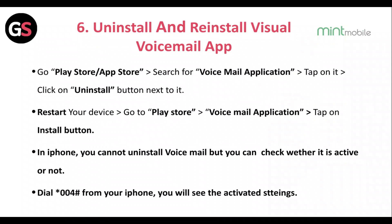Fix 6: Uninstall and reinstall the Visual Voicemail app. Go to the Play Store or App Store and search for the Voicemail application. Tap on it and click Uninstall, then restart your device. Go back to the Play Store, select the Voicemail application, and tap Install. For iOS, you cannot uninstall Voicemail, but you can check whether it is active by dialing star 004 hash from your iPhone to see the activated settings.